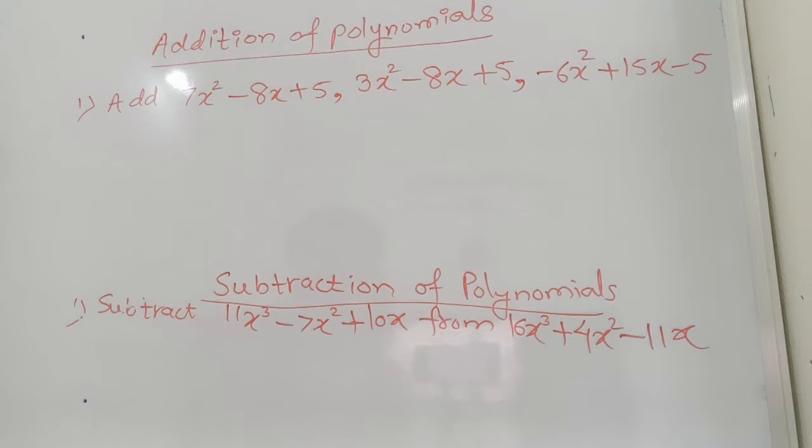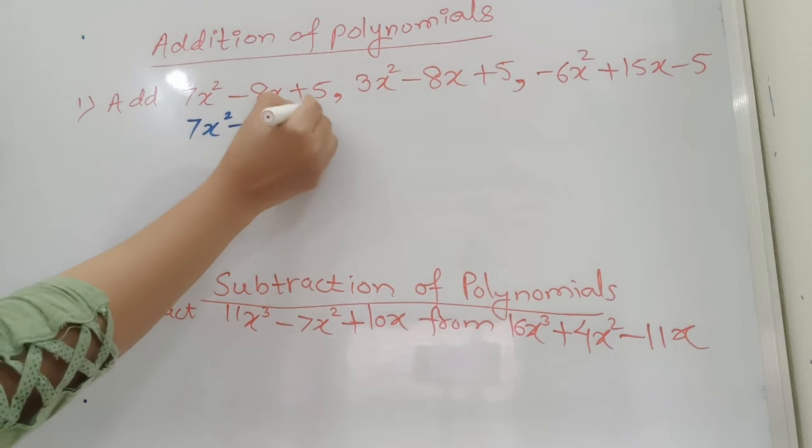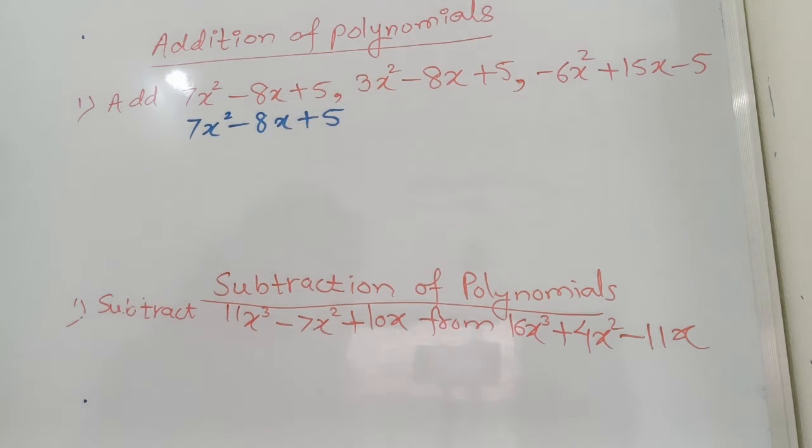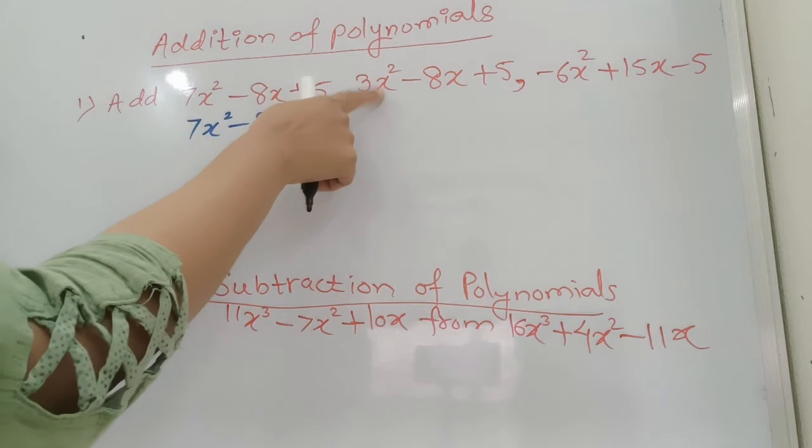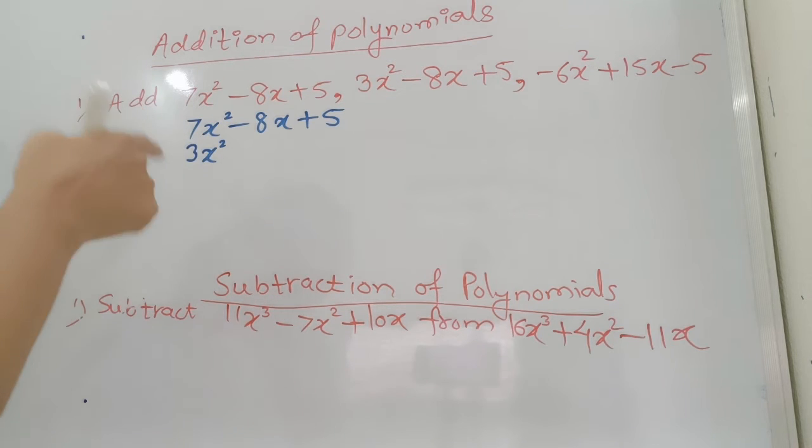We will arrange the like terms first. I will write 7x² - 8x + 5. You can add the like terms vertically as well as horizontal. 7x² having this like term 3x² so it should come below that only. Minus 8x plus 5.